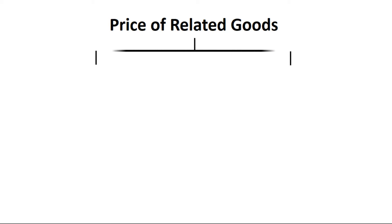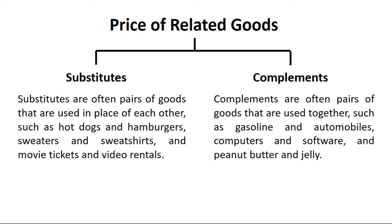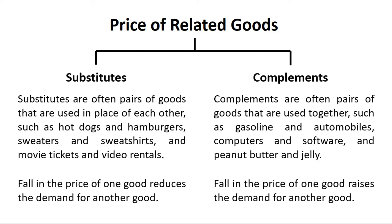The next variable is price of related goods. Related goods can be of two types: substitutes or complements. Substitutes are pairs of goods used in place of each other, such as hot dogs and hamburgers, sweaters and sweatshirts, and movie tickets and video rentals. Complements are pairs of goods used together, such as gasoline and automobiles, computers and software, and peanut butter and jelly. In case of substitutes, a fall in price of one good reduces the demand for another — a direct relationship. In case of complements, a fall in price of one good raises the demand for another — an inverse relationship.